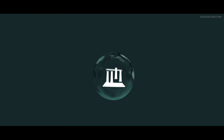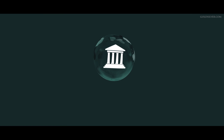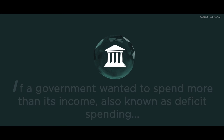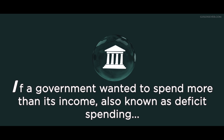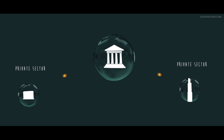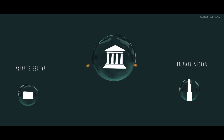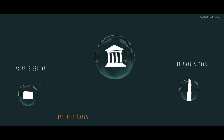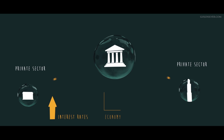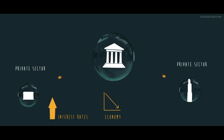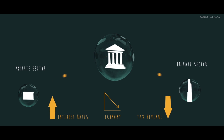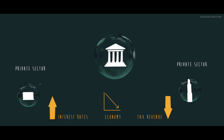With gold, government spending was also constrained. If a government wanted to spend more than its income — also known as deficit spending — it had to borrow gold from the private sector. If the government borrowed too much gold, it would cause interest rates to rise, which in turn would slow the economy, which in turn would cause tax revenues to fall.